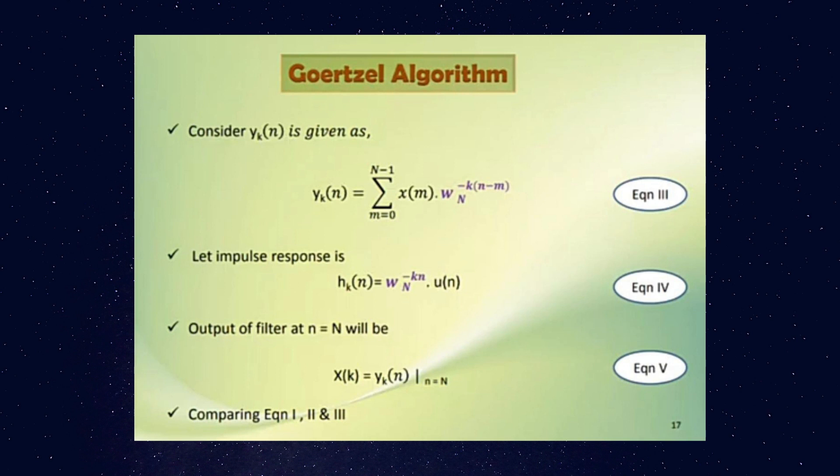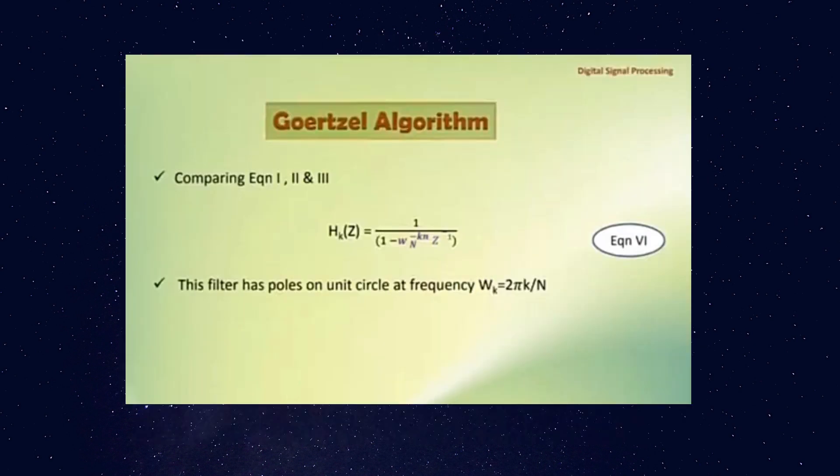Comparing Equation 1, 2 and 3 we get the transfer function Hₖ(z) equals 1 divided by 1 minus ωₙ⁻ᵏⁿ into z to the power minus 1. So this filter has poles on unit circle at frequency ωₖ equals 2πk/N.